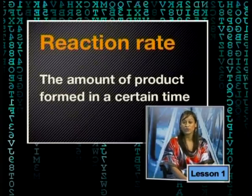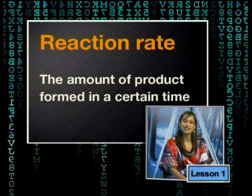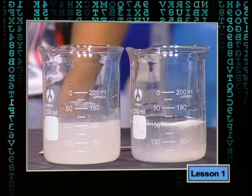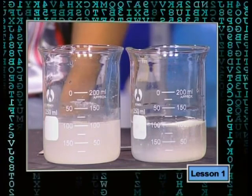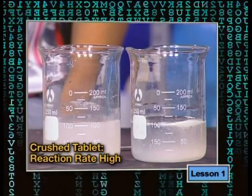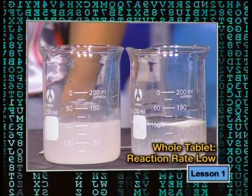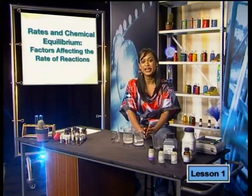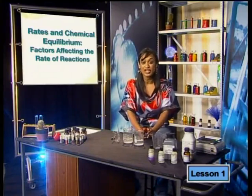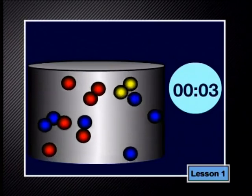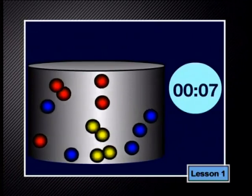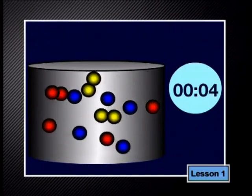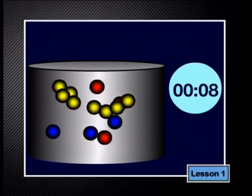The reaction rate, or rate of reaction, is the amount of product formed in a certain time. After 55 seconds, all of the crushed tablet reacted, while some of the uncrushed tablet remained unreacted. We say that the reaction rate for the crushed tablet is high because more product formed in 55 seconds compared to the solution containing the whole tablet. Chemists use collision theory to explain this: when few collisions take place in a certain time, the rate of reaction is low; when lots of collisions take place, more product particles form and the reaction rate is high.